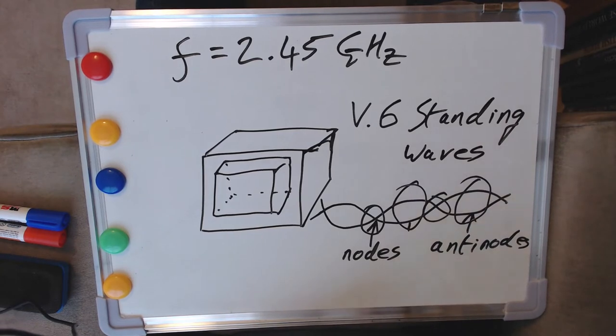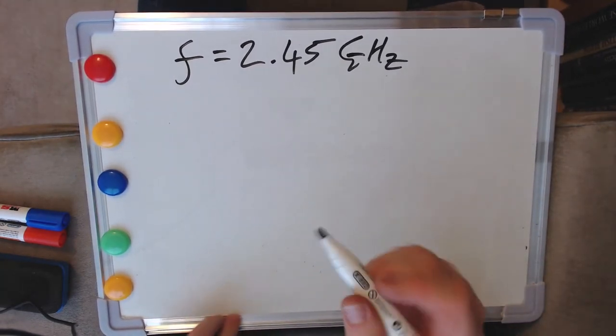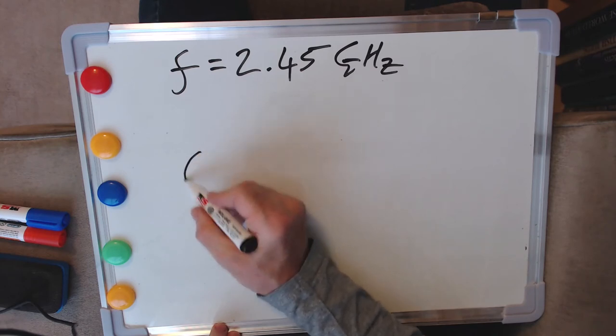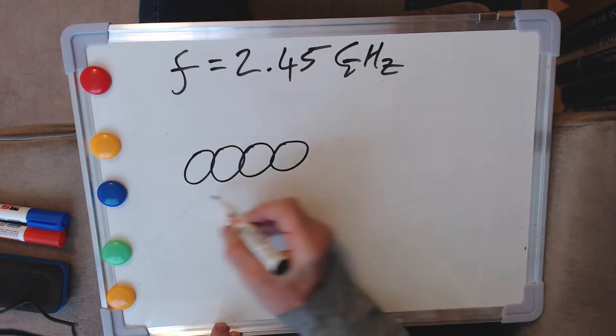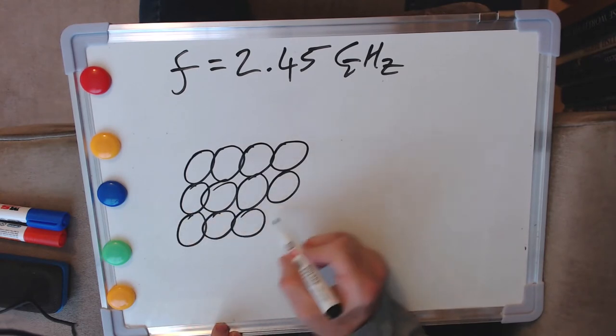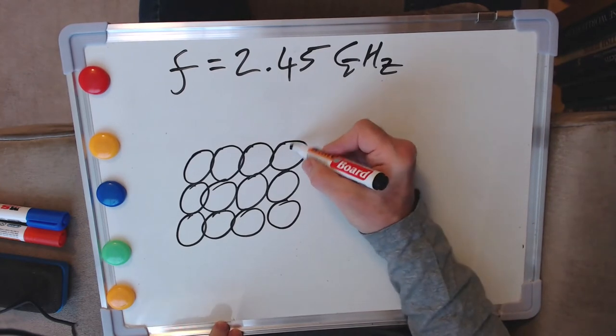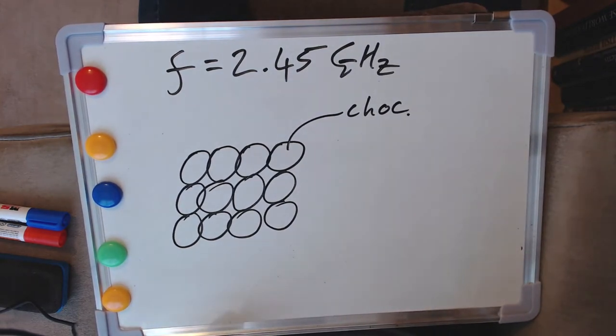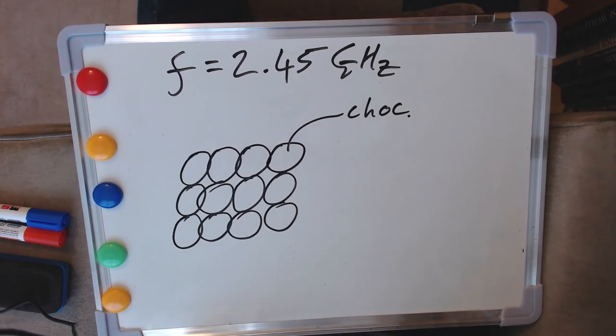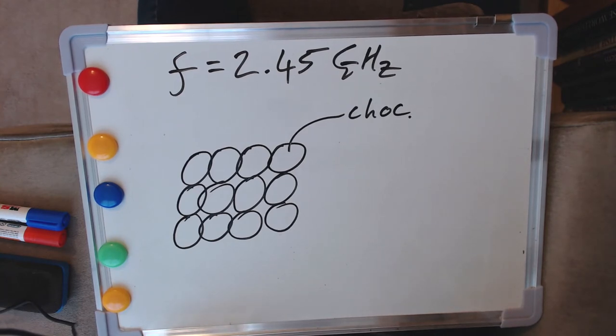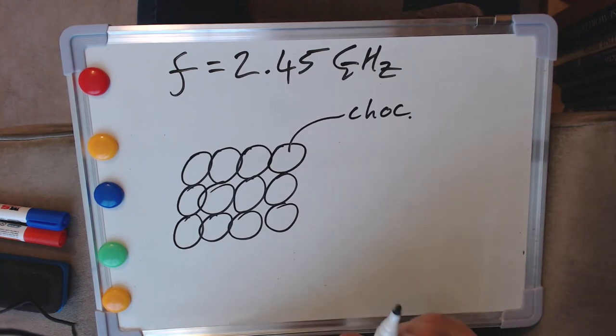So the upshot of this in a practical sense is that we get most heating around these anti-nodes wherever they happen to be in our box and we get minimum heating where the nodes are, and that's what we're going to use to do our experiment. I need a clean board to show you where this is going. Okay so the arrangement that we're going to set up here is a neat tray, and in fact you'll see on the recording that this is actually just a sheet of cardboard with some baking parchment on top with our chocolate digestive biscuits.